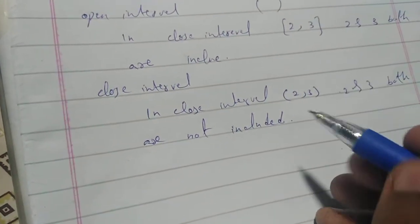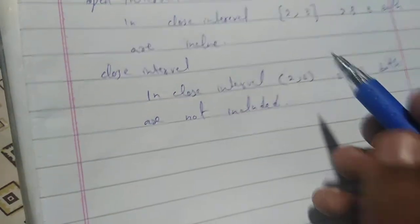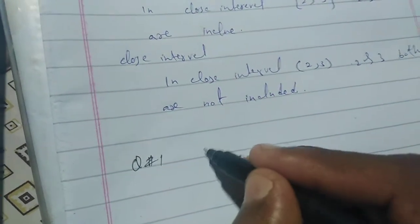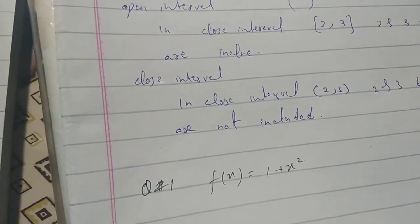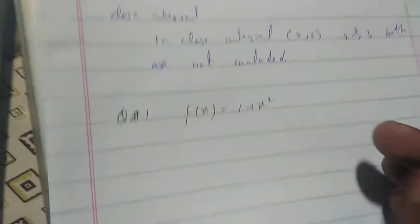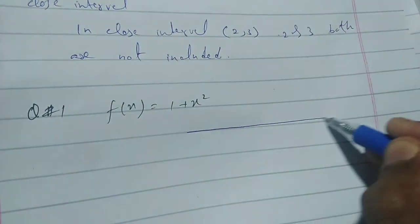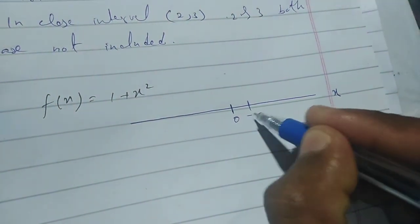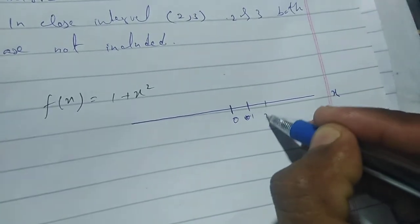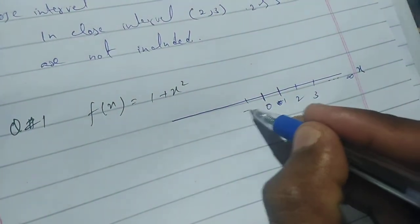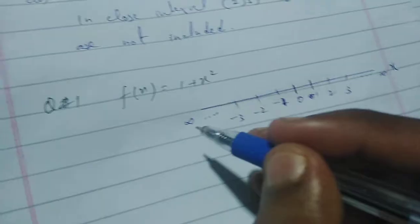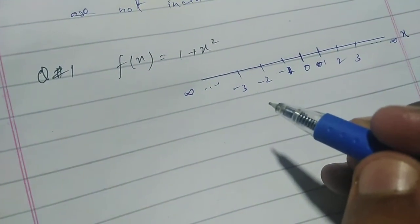Now I want to solve question number one of Exercise 1.3. Question number one is f(x) = 1 + x². We want to find the domain. There is a real number line, and the numbers on it go: 1, 2, 3 approaching positive infinity, and on the left side −1, −2, −3 approaching negative infinity. We can put at least four to five numbers to check the domain.